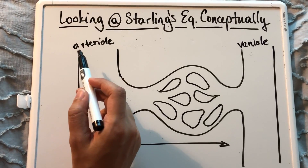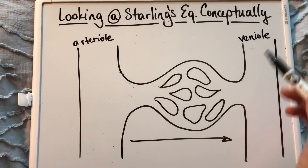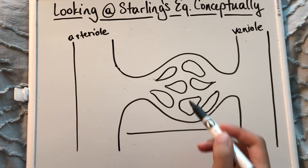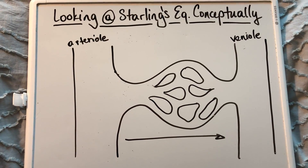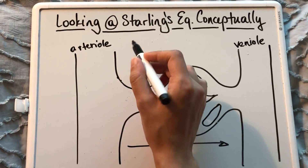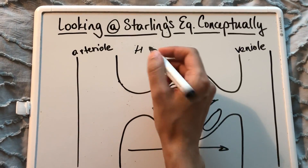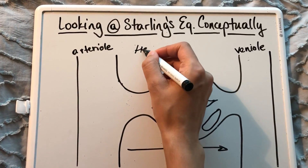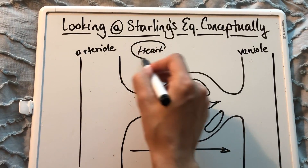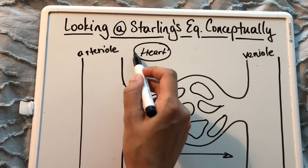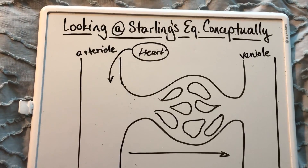On this side we have an arteriole and a venule. And in the middle here we have a capillary bed. And the heart is somewhere, and it's going to pump blood into the arteriole.